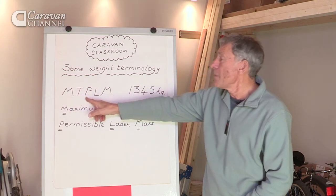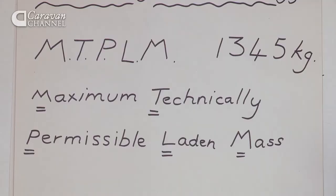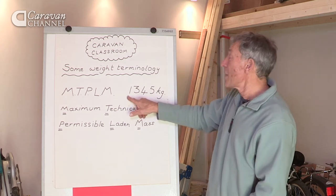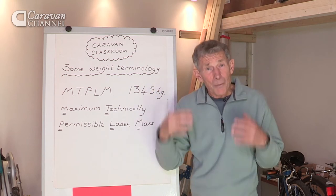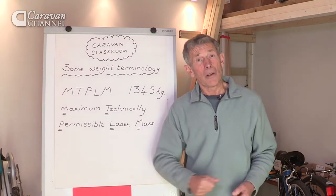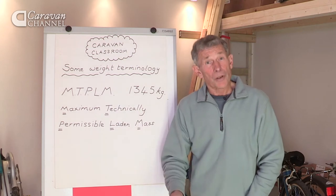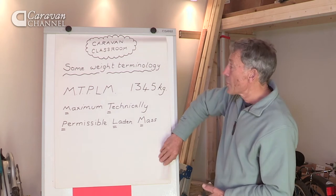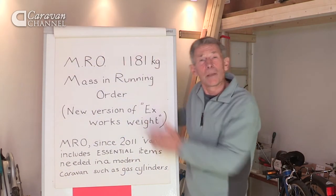On the side of the caravan it has a label marked MTPLM, which stands for Maximum Technically Permissible Laden Mass. On the caravan we used, it's 1345 kg. What it means is the absolute maximum that caravan is allowed to be on the road — it's built to be at that particular weight and no more, so you must adhere to that and never exceed it.